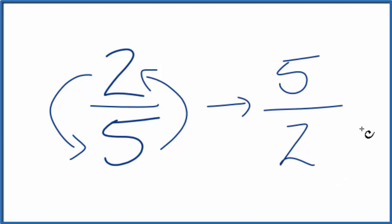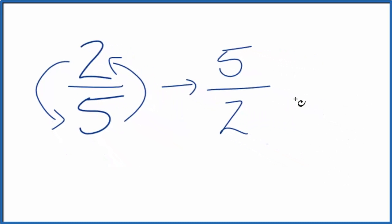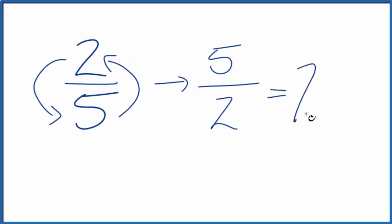We can change this to a mixed fraction. It's an improper fraction. 2 goes into 5 twice with 1 left over, so 2 and a half.